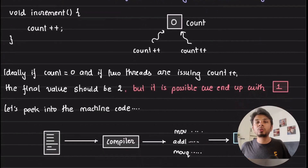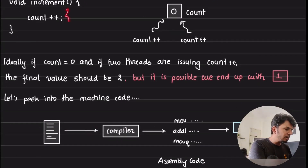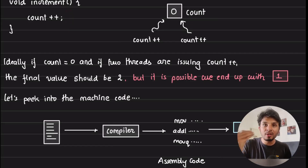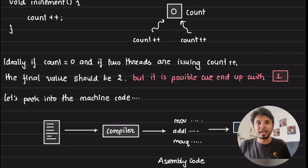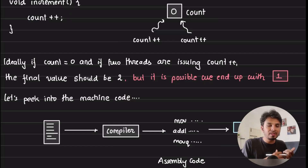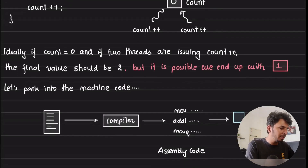But it is possible that my final value is not two but instead is one. We have fired one operation but it is still not atomic. Why is this happening? For us to understand this, it's important to go deep into the assembly language code and see what exactly is happening behind the scenes. We would have to generate the machine code — also called assembly code — out of our C code.